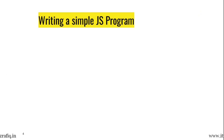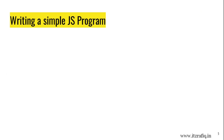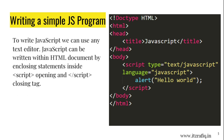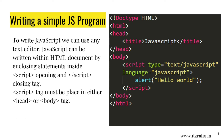Writing a simple JavaScript program: To write a JavaScript program we can use any text editor — it can be Notepad, Notepad++, Sublime, or any text editor. JavaScript can be written within an HTML document by enclosing statements inside a script opening tag and script closing tag. The starting tag of an element is known as the opening tag and the ending tag of an element is known as the closing tag. The script must be placed either in the head or body tag.